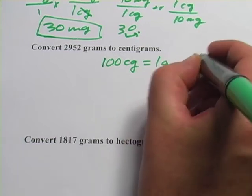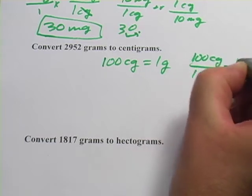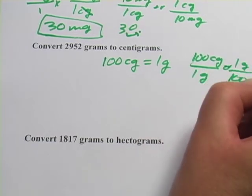Conversion factors, then, would be 100 centigrams per 1 gram, or 1 gram per 100 centigrams.